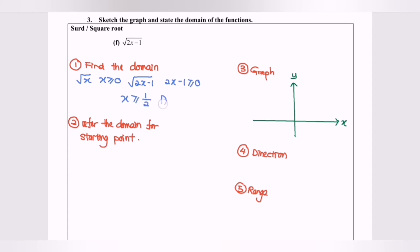So the domain is [1/2, +∞). Step two: referring to the domain, the starting point is at x = 1/2. If we substitute x = 1/2 into the equation, the value of y equals zero.